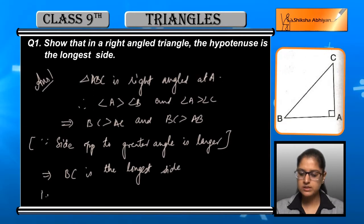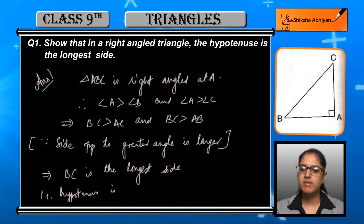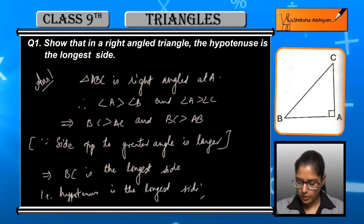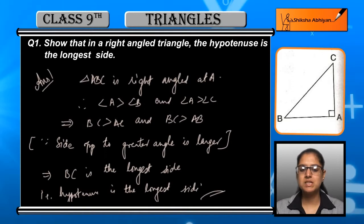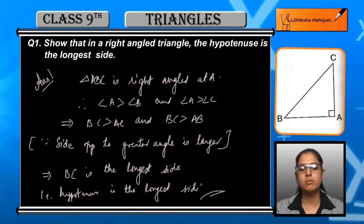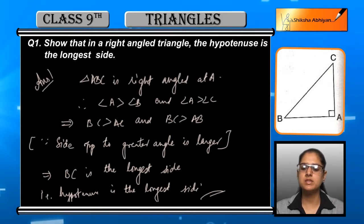The reason behind this is that the side which is opposite to the greater angle is larger. So BC is the longest side, that is, hypotenuse is the longest side of a right angled triangle.